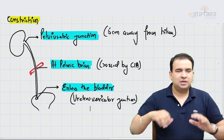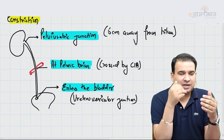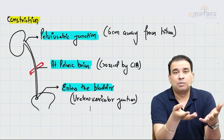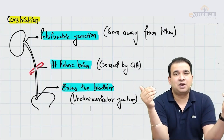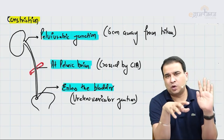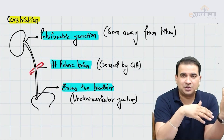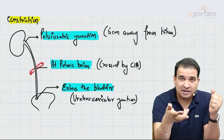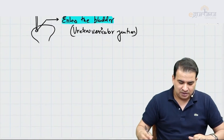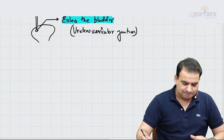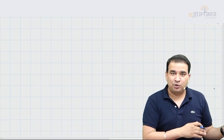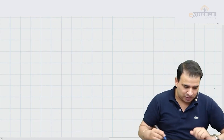Now, in the ureter, the anterior relations are more important because of important blood vessels running in front of it. The posterior relation is common — it runs on the psoas major muscle — so there's not much in the posterior relation. All the important relations of the ureter are anteriorly placed. We'll look at the right and left side based on what we already discussed regarding blood vessels and peritoneum.